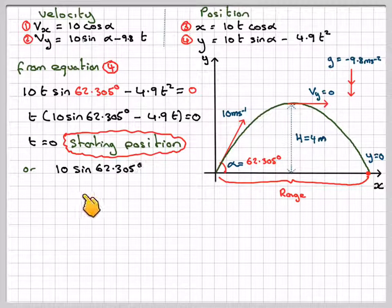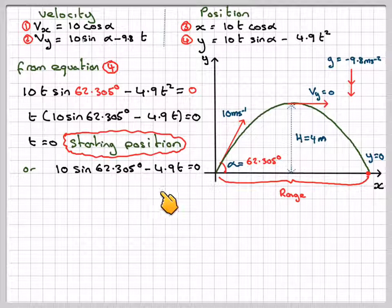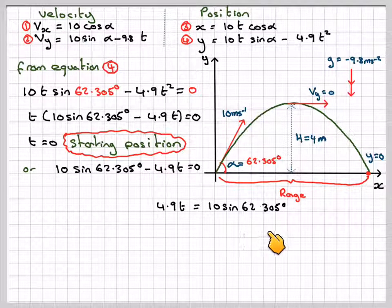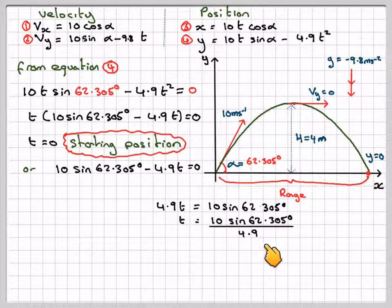Or 10 sin 62.305 minus 4.9T equals 0. Solving that, 4.9T equals 10 sin 62.305, so T equals 10 sin 62.305 divided by 4.9.